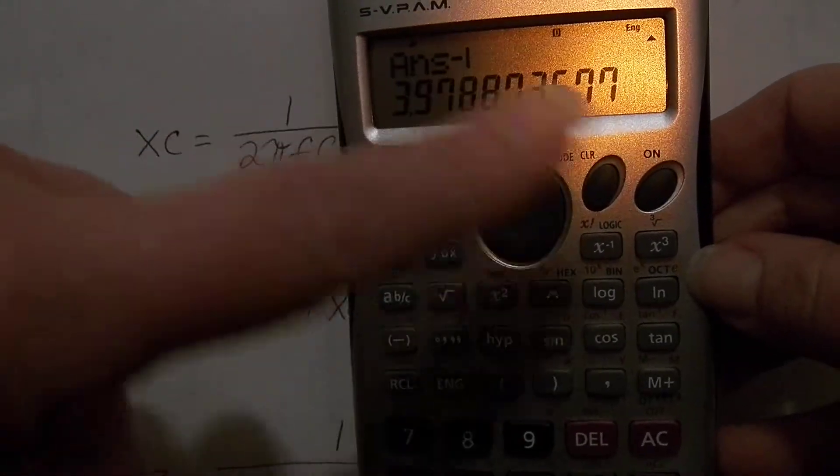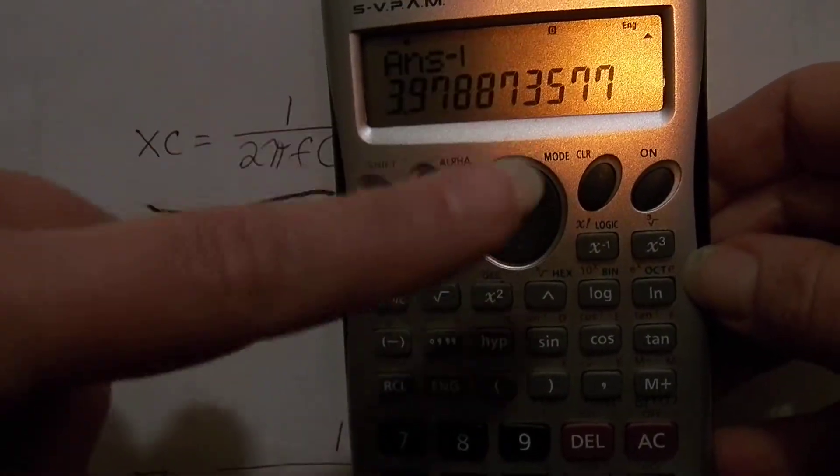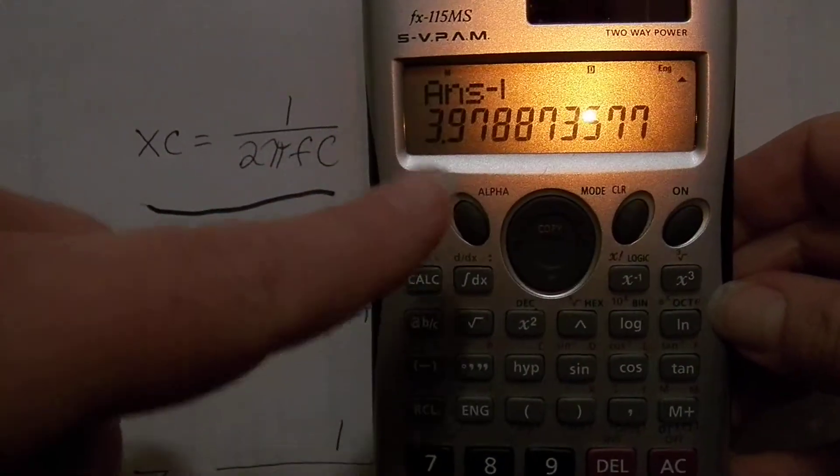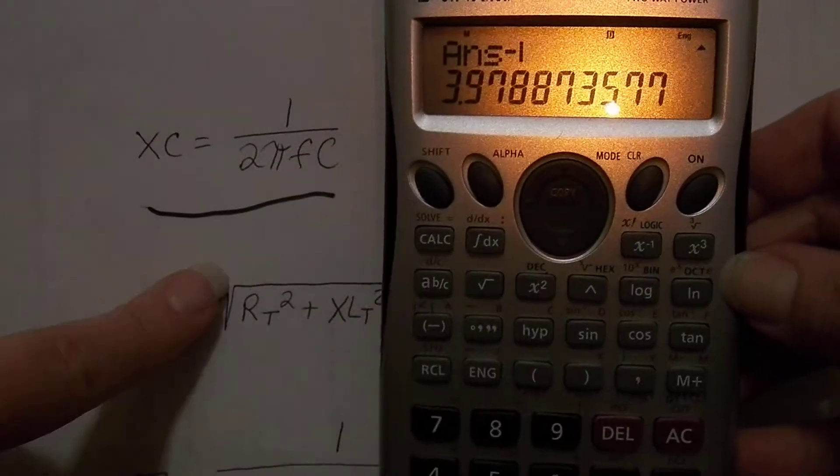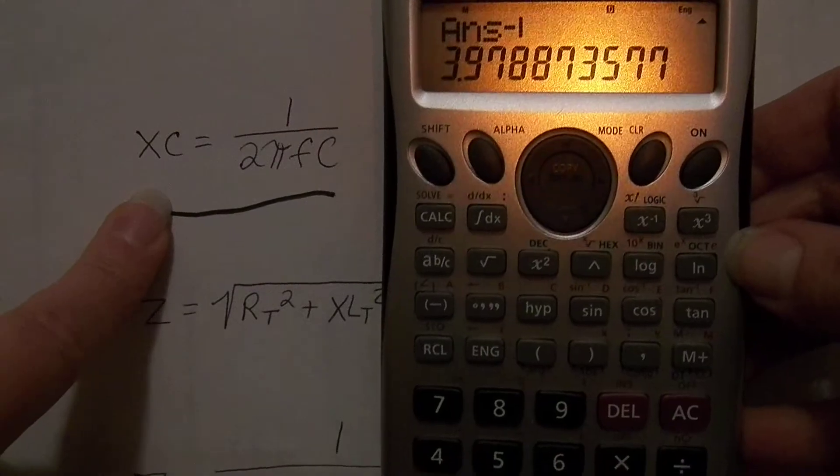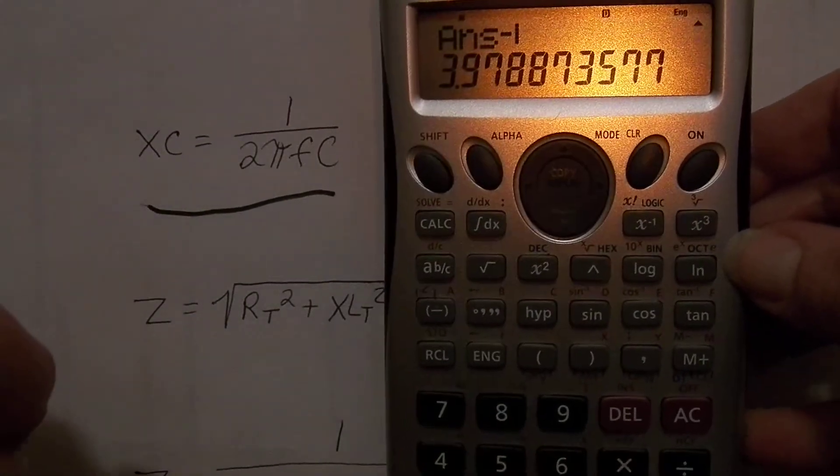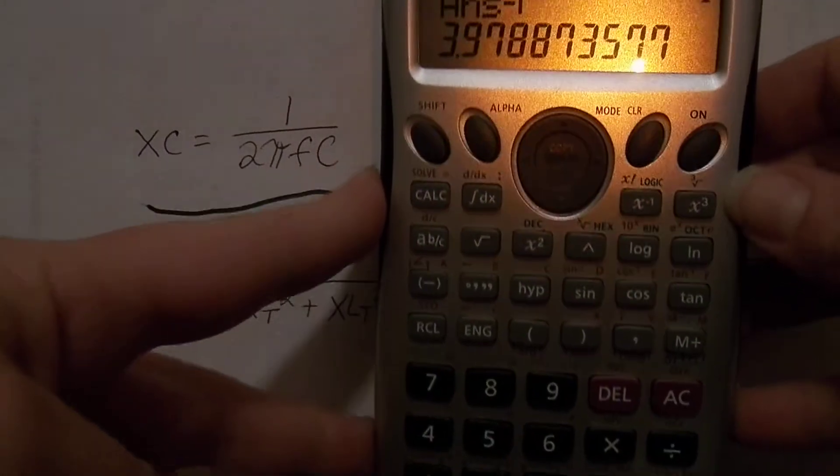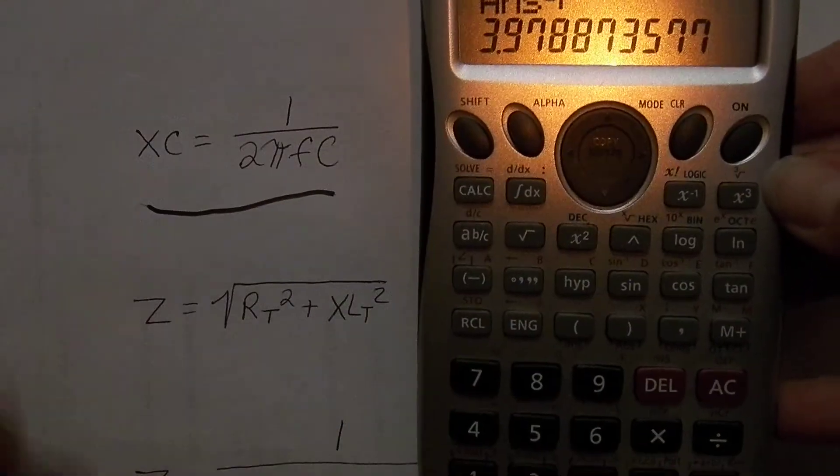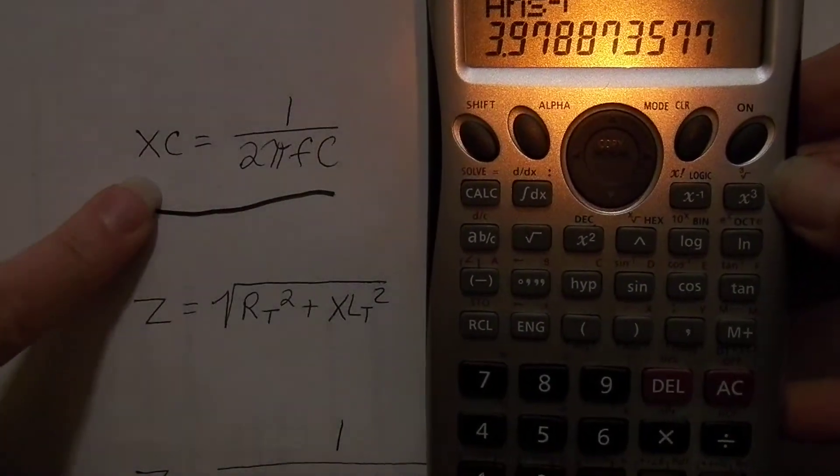So it took the answer of what you did previously and then x^-1, and you get a total capacitive reactance—that's what we were looking for—of 3.98 if you round up. So that is how to do your order of operations for your capacitive reactance. You must start first with this and then do that.